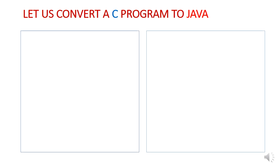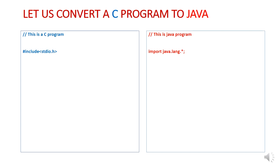Let us learn how to convert a simple C program into Java. In C we have single-line comments using //, which can also be used in Java — no difference there. In C we write #include stdio.h as a preprocessor statement to include library functions. But in Java we have an import statement instead. In C we have header files; in Java we have packages. There we write #include; here we write import. That is the difference.